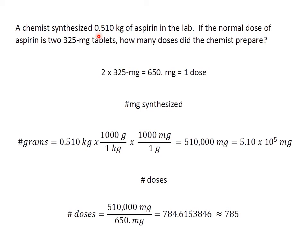A chemist synthesized 0.510 kilograms of aspirin in the lab. If the normal dose of aspirin is two 325-milligram tablets, how many doses did the chemist prepare? Well, it's two tablets per one dose, so two times 325 milligrams — each tablet weighs 325 milligrams. So two times that is 650 milligrams equal to one dose.